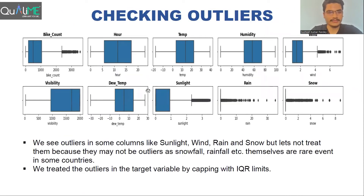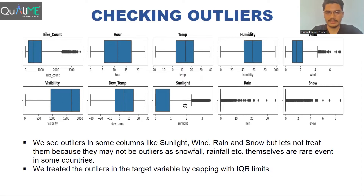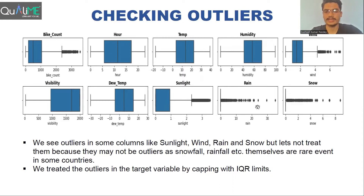After that, we started checking for outliers. Data points outside the whiskers in the box plot represent the outliers. We see some outliers in the bike count column, sunlight, rain, and snow. We treated the outliers in the bike count column using the standard IQR method and capping them. For rainfall and snowfall, since these are themselves rare events in some countries, those data points may look like outliers but are not actually outliers — they may contain useful information, so we did not treat those two features.